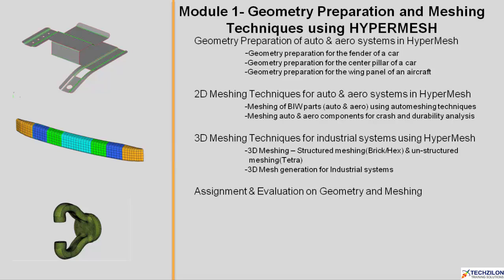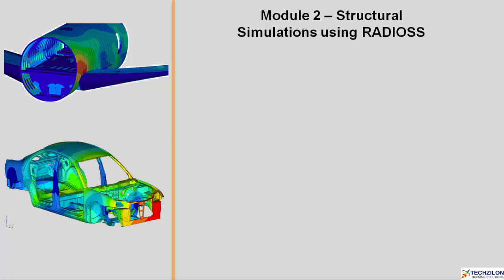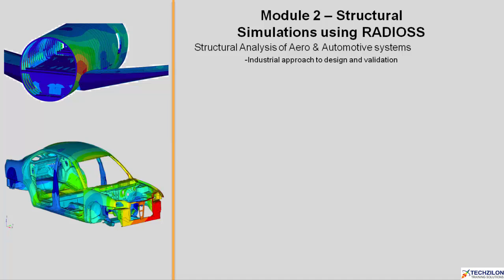Module 2 covers Structural Simulations using Radios. You will learn Structural Analysis for Aero and Automotive Systems, an Industrial Approach to Design and Validation, Introduction to FEA and CAE Workflow, and Introduction to Strength of Materials.